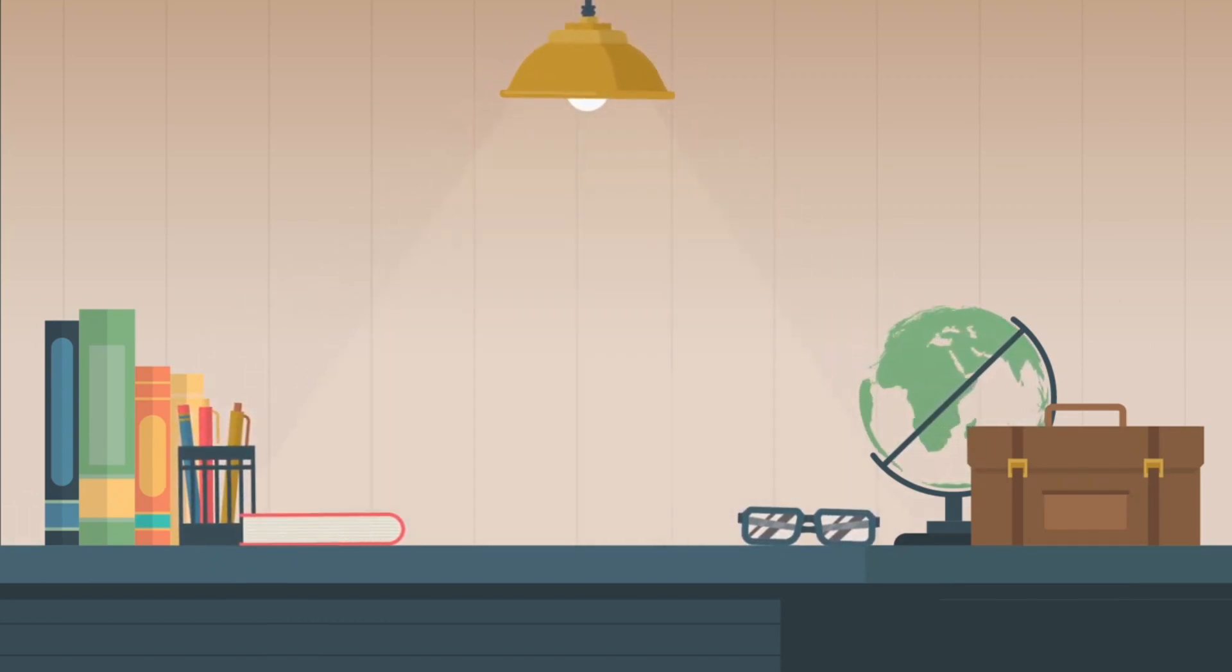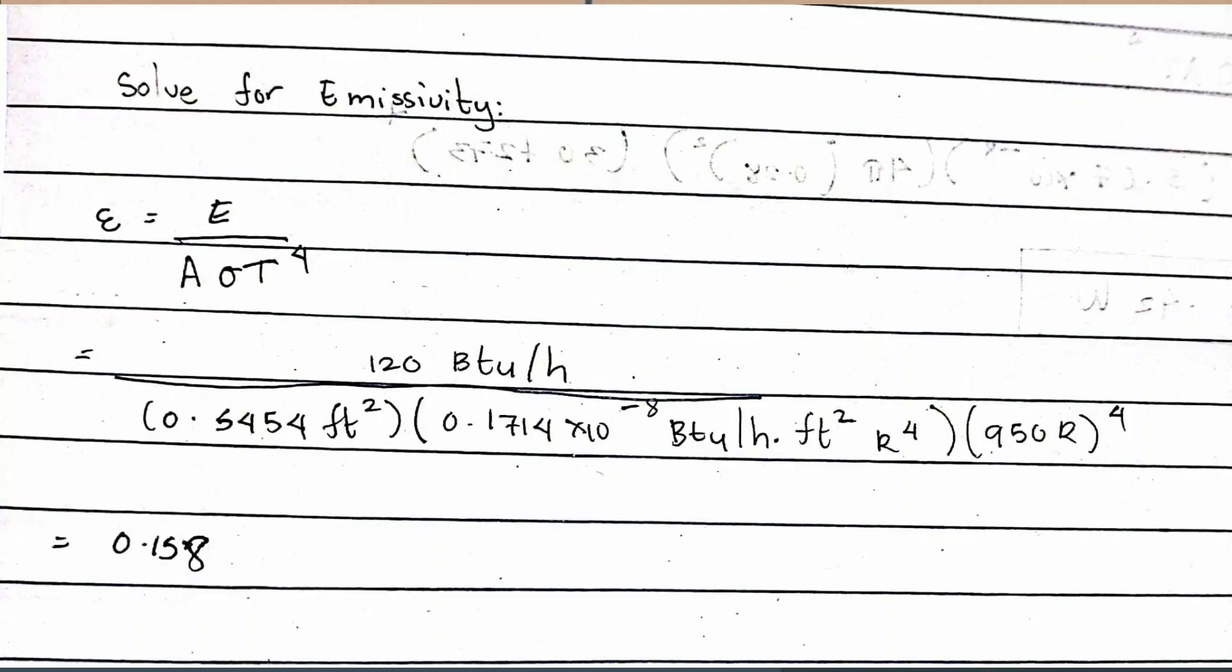Since you already have the value for area, you can now solve for the emissivity. So epsilon is equals to E over A sigma T raised to 4.